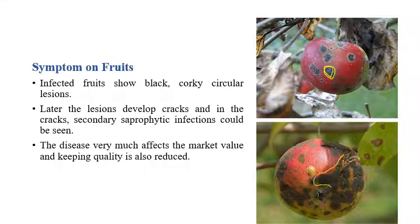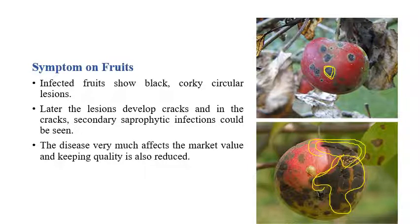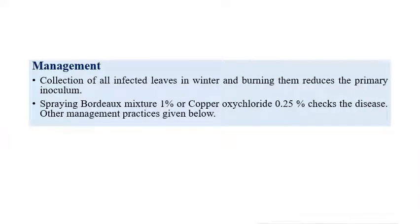Rough, corky outgrowth can be seen on fruits and cracking symptoms can also be observed. Circular corky outgrowth along with cracking can be seen on fruits. In later stages, the size of the fruits is greatly reduced, along with the market price.